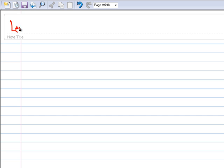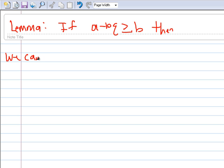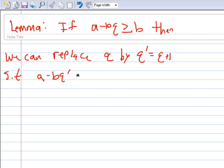Lemma: If A minus BQ is greater than or equal to B, then we can replace Q by Q prime equal to Q plus 1 such that A minus BQ prime is still greater than or equal to zero.